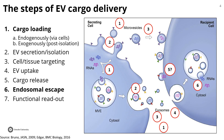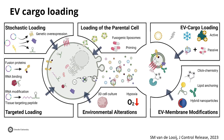Firstly, on cargo loading. This figure is from a review published earlier this year in Journal of Controlled Release. It gives a nice overview. There are various ways to load cargo into EVs. My favorite topic of research is targeted loading. On the left there are four categories surrounding the EV-producing cell, and on the right there are two categories focused on loading cargo into EVs that have already been isolated.